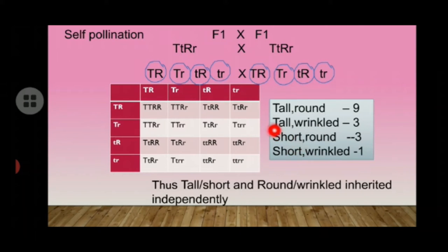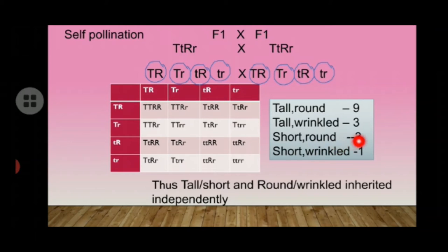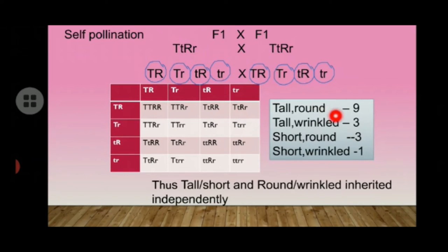We found that tall and short, and round and wrinkled characters are inherited independently. That is why new combinations of plants are seen — for example, tall with wrinkled seeds and short with round seeds are new combinations. By his experiment, Mendel found that traits are inherited independently.